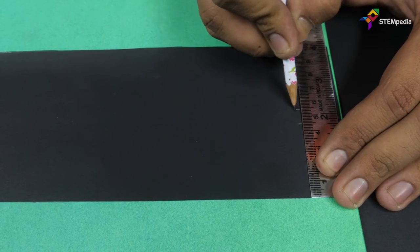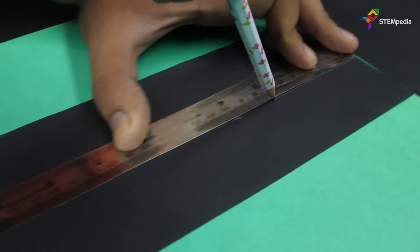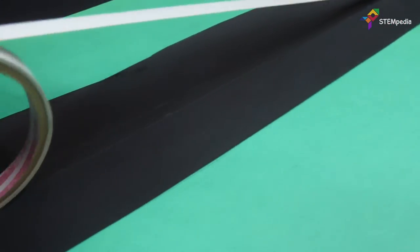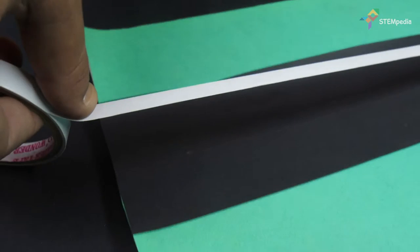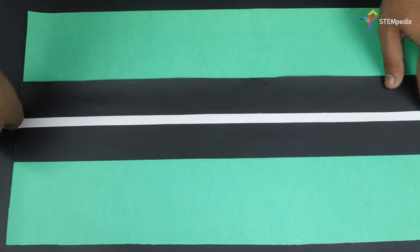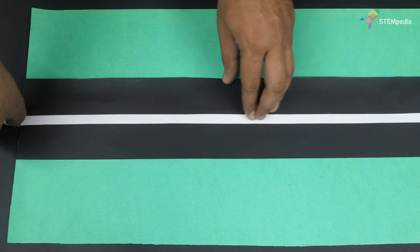Now, draw a line of 1cm width along the center of the road. Stick white tape on the marked line for making the divider. Stick the tape on both the sides of the road as well.